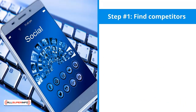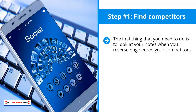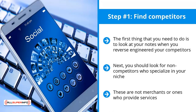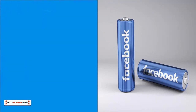Step number one: find competitors. The first thing you need to do is look at your notes from when you reverse-engineered your competitors. These people are in the same niche as you — you studied them to get to the industry standard content strategy as well as page layout and design for your own Facebook page. Next, you should look for non-competitors who specialize in your niche. These are not merchants or ones who provide services; they cater to the same audience as you. Try to find as many of these as possible.